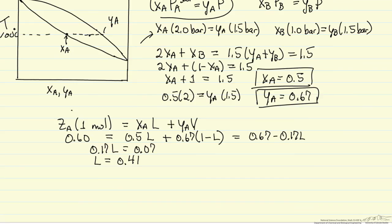So we can do the math here. The fraction of the original one mole, or the fraction that's liquid at equilibrium is 0.41, which says 41% of the original vapor condenses at 100 degrees C.